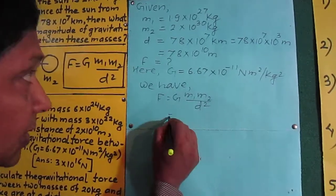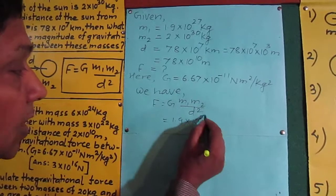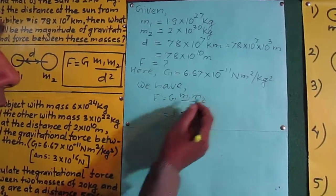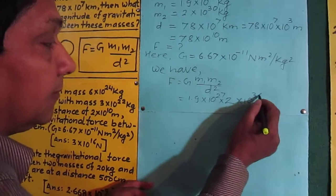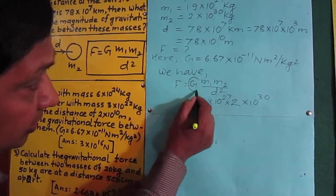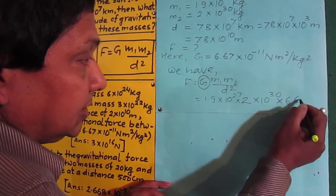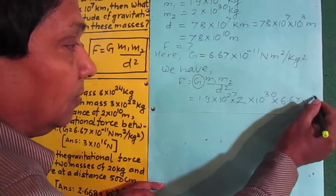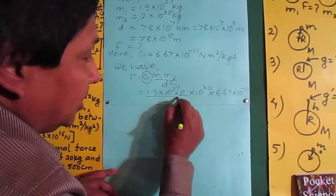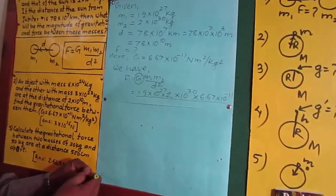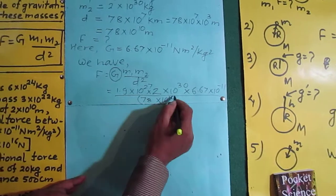Substituting the values: M1 = 1.9 × 10²⁷, M2 = 2 × 10³⁰, G = 6.67 × 10⁻¹¹. Now divided by D squared, where D = 78 × 10¹⁰.